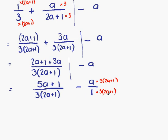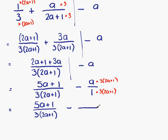The second fraction will be multiplied by 3 times (2a plus 1). Remembering that when we multiply on the bottom, we must multiply by the same amount on the top so that our fraction is equivalent. So what we have now is our first fraction again: 5a plus 1 over 3 times (2a plus 1). And our second fraction — the denominator is 1 times 3 times (2a plus 1), which is just 3 times (2a plus 1), the same as the first fraction. And on the top line we have a times 3 times (2a plus 1), which can be written 3a times (2a plus 1).